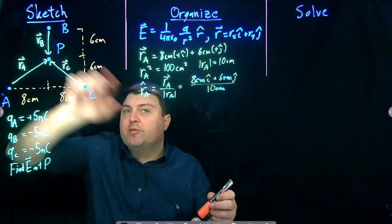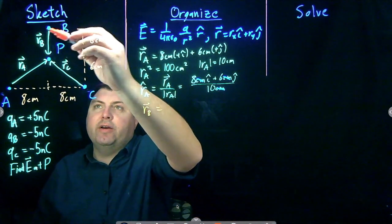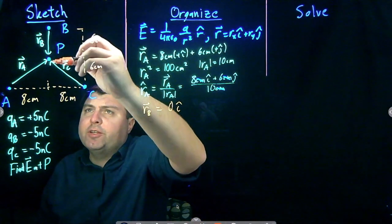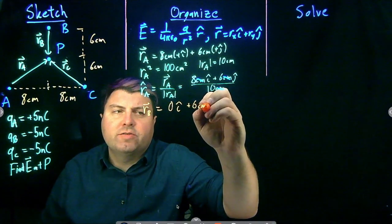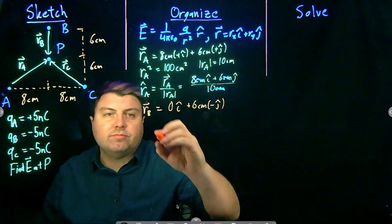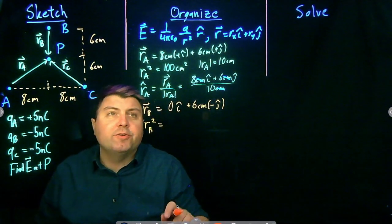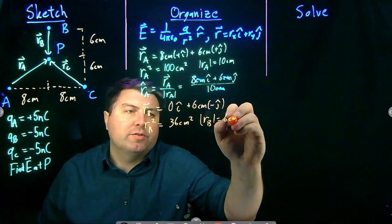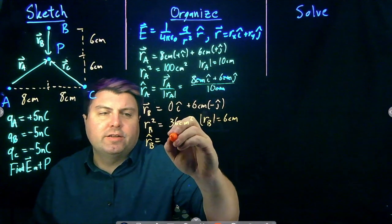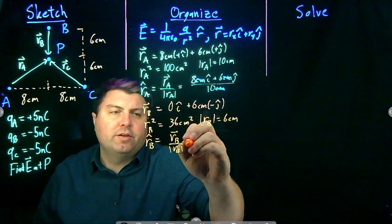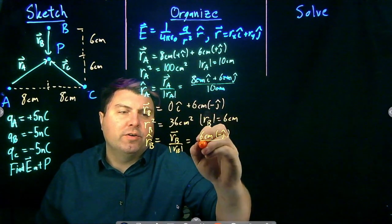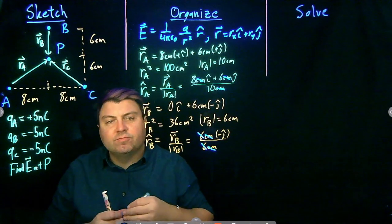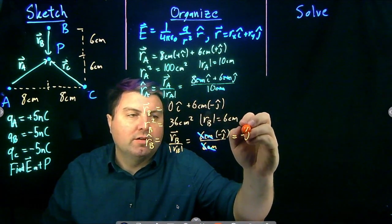Now let's look at B. For R_B, I go 0 in the X direction — I'm already directly above — so 0 î. Then I go 6 centimeters down, so negative 6 cm ĵ. R_B squared is 6 squared equals 36 cm², so the magnitude of R_B is 6 cm. R̂_B equals (-6 cm ĵ) divided by 6 cm, the centimeters and the 6s cancel, giving R̂_B = -ĵ.